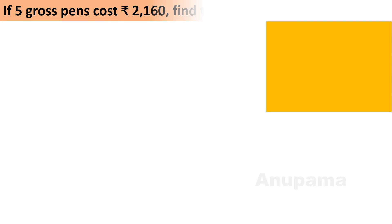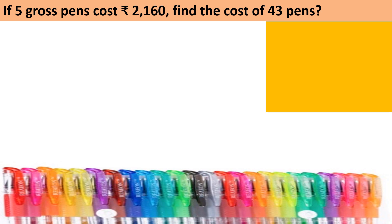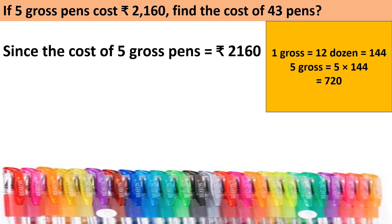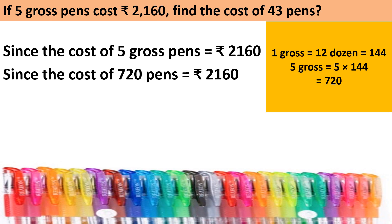Let us do one more question. If 5 gross pans cost Rs. 2160, find the cost of 43 pans. The cost of 5 gross pans equals Rs. 2160. Now, 1 gross equals 12 dozen, which means 12 into 12 equals 144. So 1 gross equals 144, and 5 gross equals 5 multiplied by 144, which is 720. So the cost of 720 pans equals Rs. 2160.